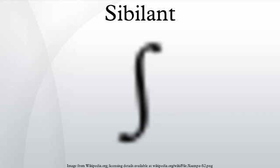They occur in English, where they are denoted with the letters S or Z, as in soon or zone. Alveolopalatal: with a convex, V-shaped tongue, and highly palatalized. Palatoalveolar: with a domed tongue. These sounds occur in English, where they are denoted with letter combinations such as SH, CH, G, J, or C, as in shin, chin, gin, and vision.